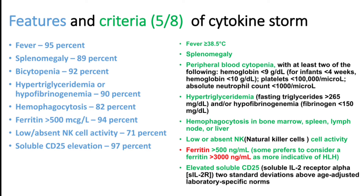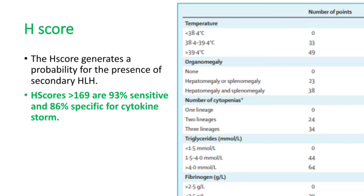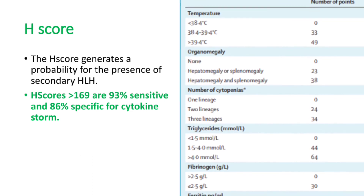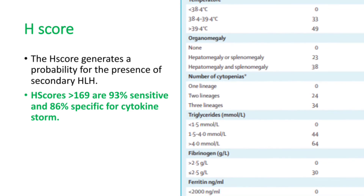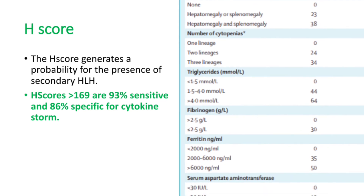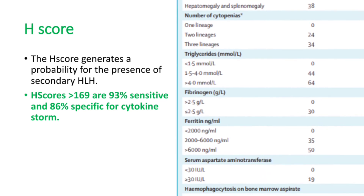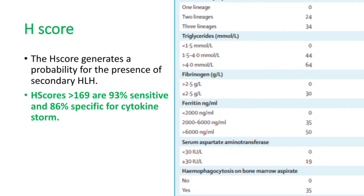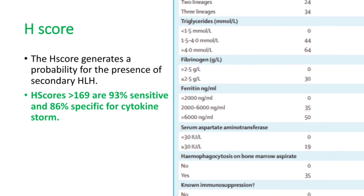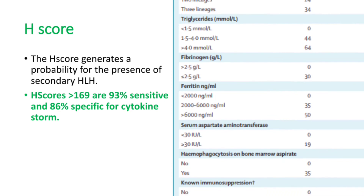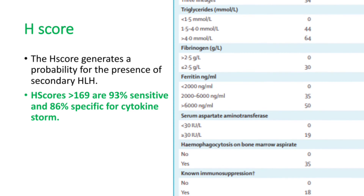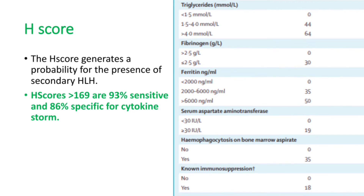There is a scoring system available for cytokine storm syndrome called the H-score. An H-score more than 165 shows 93% sensitivity and 86% specificity for cytokine storm syndrome. H-score calculators are available on Android mobile apps, making it accessible in clinical practice.